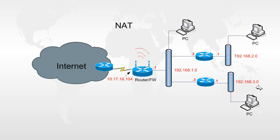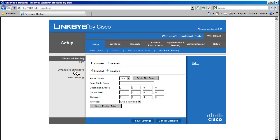The router will not know about networks that are not directly connected to it unless we tell it. So in this case, the router will not know about the 192.168.2.0 and the 192.168.3.0 networks. We have two ways of telling the router about these networks: one is the dynamic routing protocol named RIP, and the second is static routing.